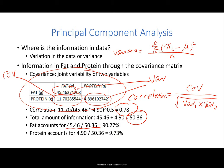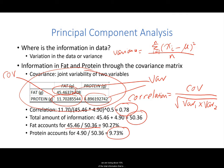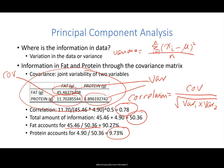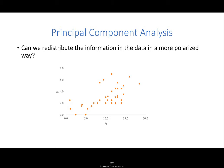Returning to our earlier questions: can we remove one of the variables, and which one should we remove? The answer is quite clear now. We can remove the variable protein because it contains less information than fat. By removing protein, we lose about 10% of the total information. But is there a better solution? Can we achieve the same reduction in dimensionality without losing that much information? To answer this, we need to think about the problem slightly differently.